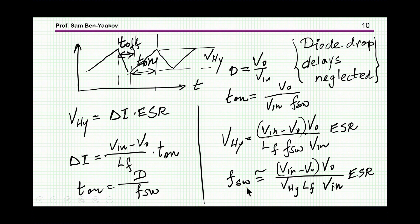Based on this we can develop very easily the relationship between the parameters of the circuit and the switching frequency that will result. We start here with saying that the width of the band, the hysteretic band, is delta I times ESR. Delta I is V_in minus V_out over the inductance times t_on. T_on is D over the switching frequency, and then we come up to this expression for the band which is delta I times ESR.